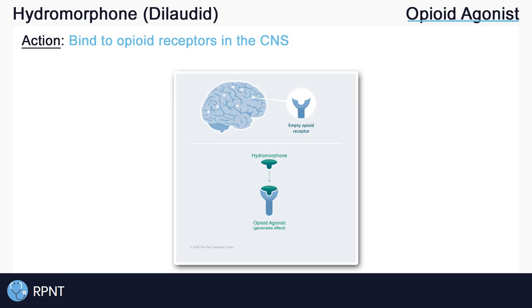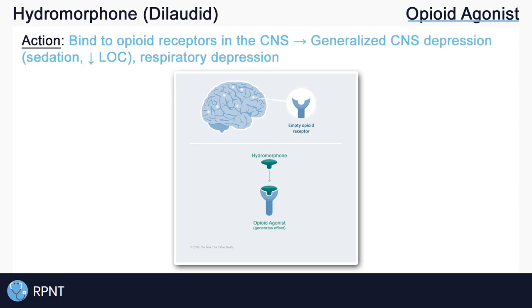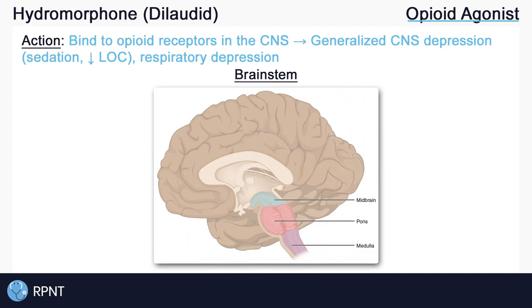Opioids like hydromorphone can cause generalized central nervous system depression, which may result in sedation, or decreased level of consciousness, and respiratory depression, or slowed breathing. Part of where hydromorphone acts is directly in the brainstem's respiratory centers, located in the medulla and the pons. This is why hydromorphone can cause respiratory depression.